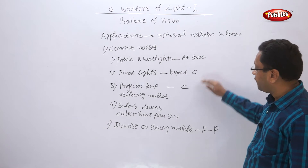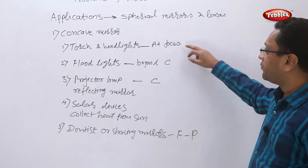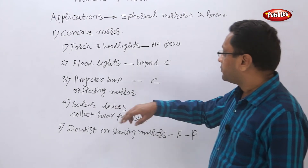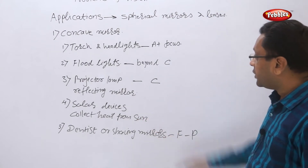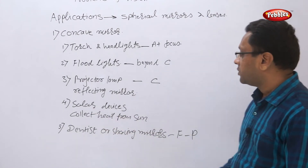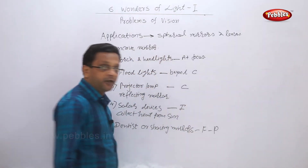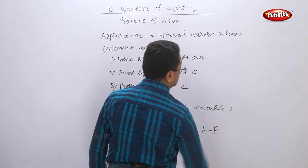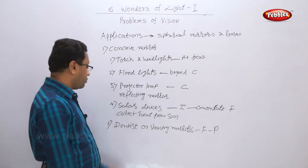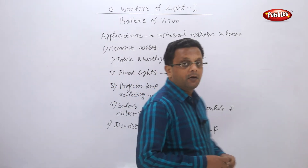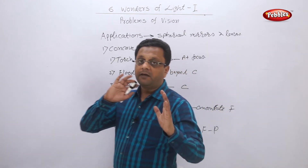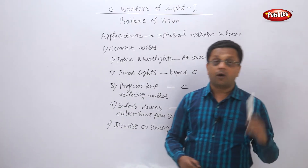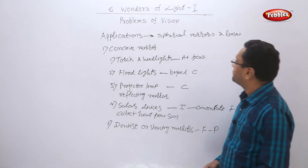To summarize the concave mirror applications: in torches and headlights the object is at the focus; in flood lights it is beyond the center of curvature; in projector lamp reflecting mirrors it is at the center of curvature; in solar devices the light rays come from infinity and are concentrated at the focal point; and in dentist or shaving mirrors the object is between F and P.